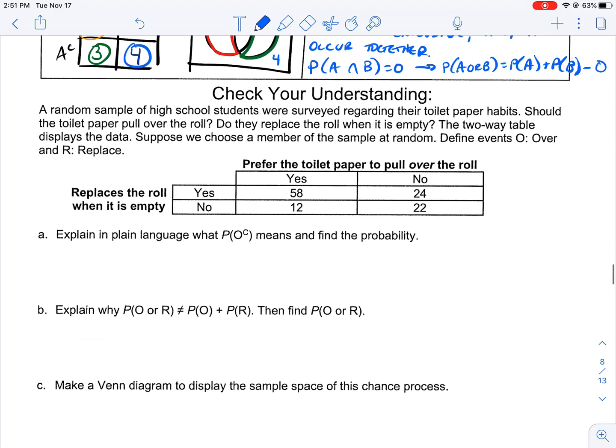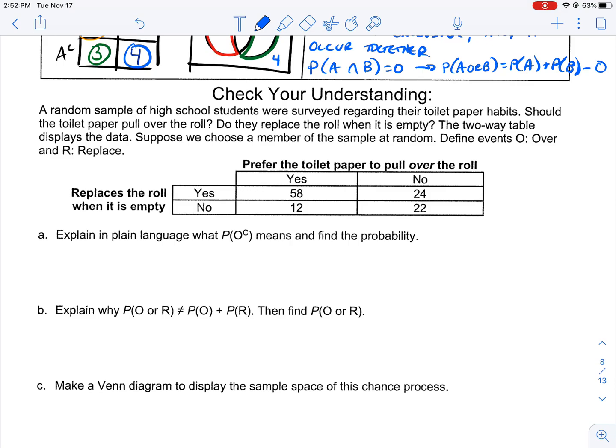Let's look at this example to help us make that connection between two-way tables and Venn diagrams. A good way to do these check your understandings would be to pause it here, try these A, B, C, and D on your own, and then come back. When I come across a two-way table, I like to take my sums across the rows and columns. 58 plus 24 is 82, 12 plus 22 would be 34, 58 plus 12 is 70, and 24 plus 22 is 46. Our total there is 116.